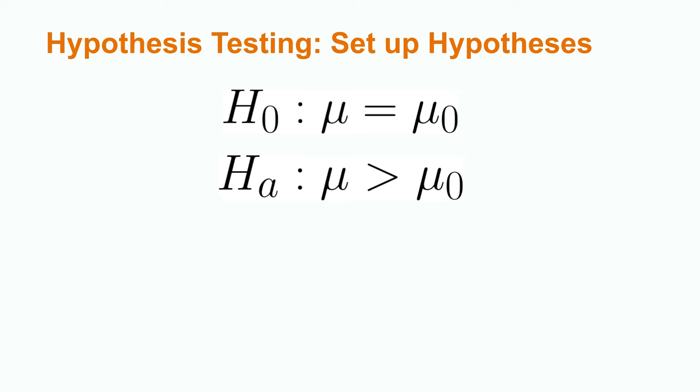An alternative hypothesis can be right-tailed, left-tailed, or two-tailed. A hypothesis is right-tailed if we want to say that our observed value is more than our hypothesized value and is denoted by Hₐ: μ > μ₀.